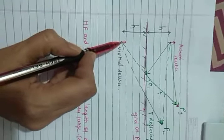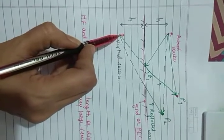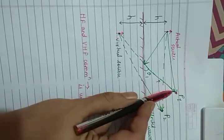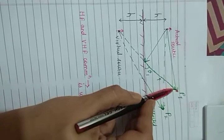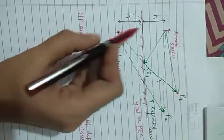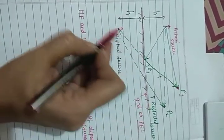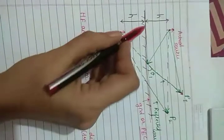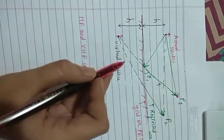We can consider this as a virtual source. At point P1, it will appear that waves are coming from the actual source as well as from an imaginary point which is at the same height below the ground.